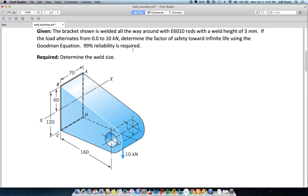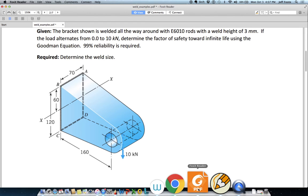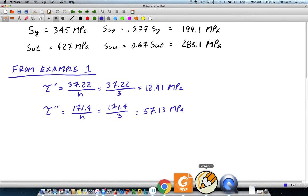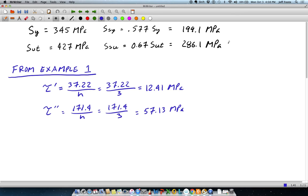Now we are using the Goodman equation. We've got a reliability indicated, and we've got a weld height of 3 millimeters. So we can use a lot of the information from the previous problem to work this one. Straight away, we've got the yield strength in shear, the ultimate strength in shear, which is given in the notes in Shigley is 0.67 times the ultimate strength. And then from the previous problem, I've pulled the equations for tau prime and tau double prime as they were there. And since we have h in this case as 3, we can calculate those values here.